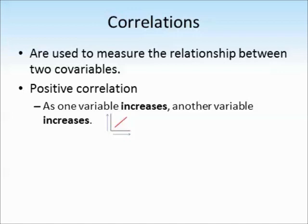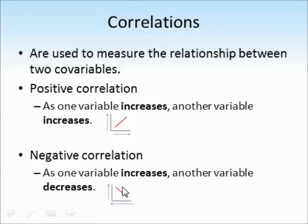We could have a positive correlation where one variable increases and the other variable also increases. So as one gets higher, the other gets higher as well. A positive correlation looks like this. Or a negative correlation, where as one variable increases, the other variable decreases or gets lower. There can also be no correlation at all.